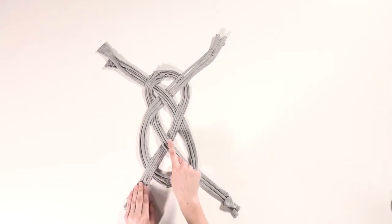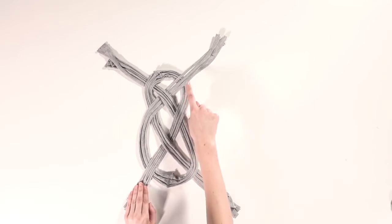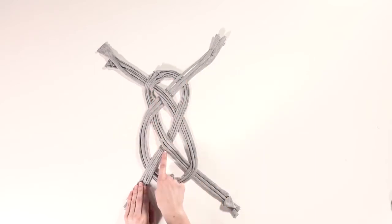Now, double check that you've made this knot correctly by starting at the bottom left-hand side of the loop. It should loop over the first strand, under the second, over again, under again, over, under, over again, and then finally under the final strand like this.